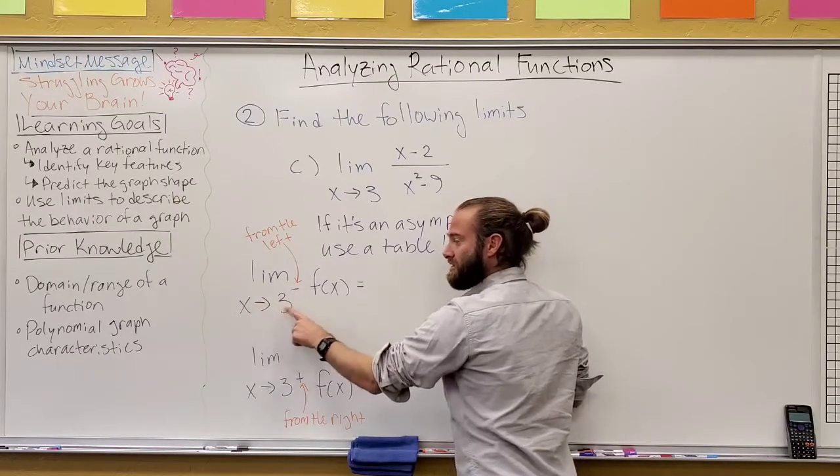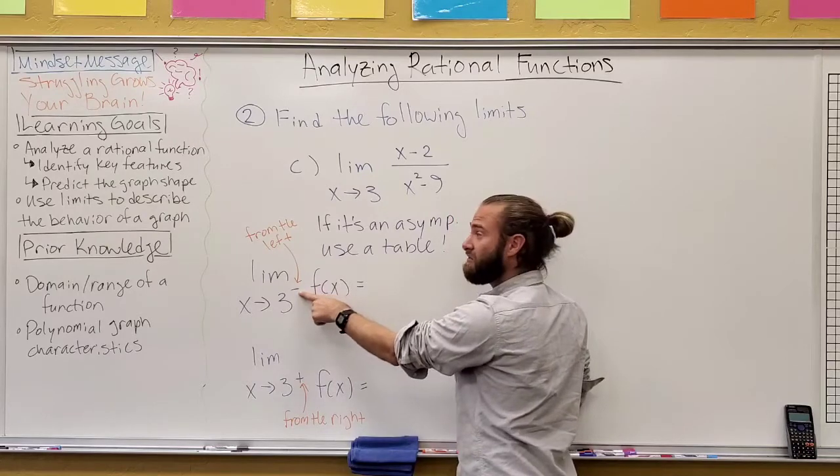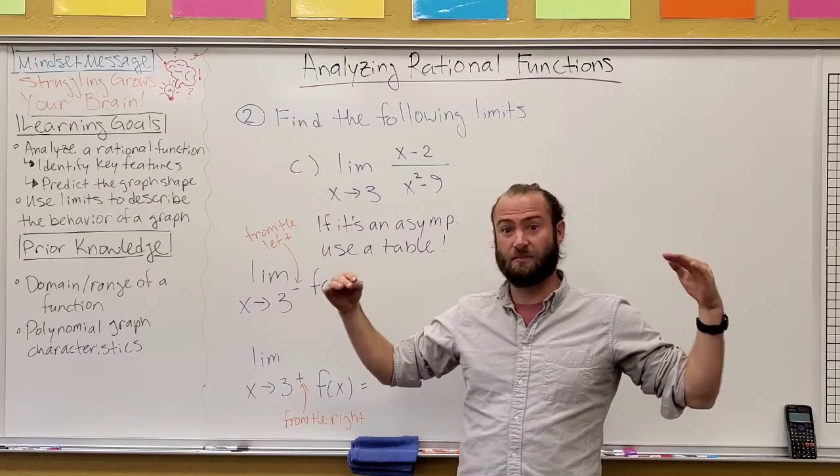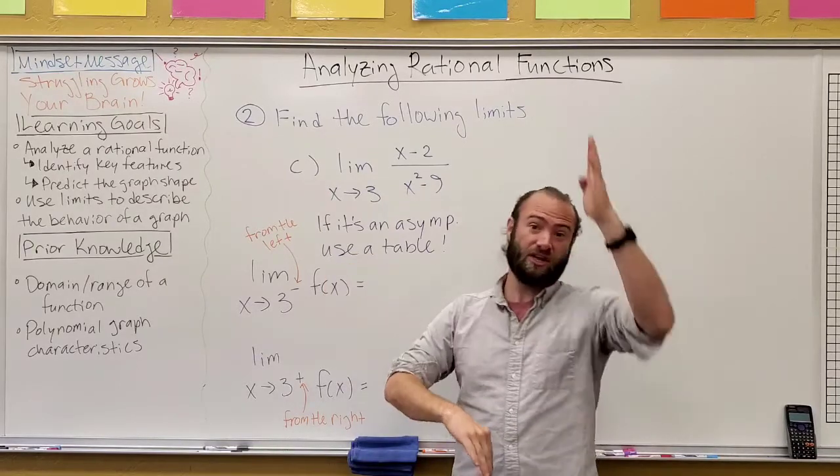one new thing we're going to introduce here is what we call one-sided limits. So, if I said the limit is x goes to three, but there's a little negative here, I mean we're coming from the left. Because we know on an asymptote, the behavior will often be different. One side goes down, the other one goes up. So, we kind of split that up.